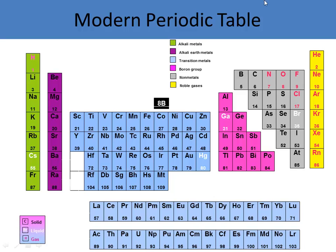This is the modern periodic table. We have our alkaline earth metals. Hydrogen really isn't part of that group — hydrogen has almost two families. Sometimes hydrogen is part of the alkali metals, and sometimes it's part of the halogens. So you can think of hydrogen as belonging to both.